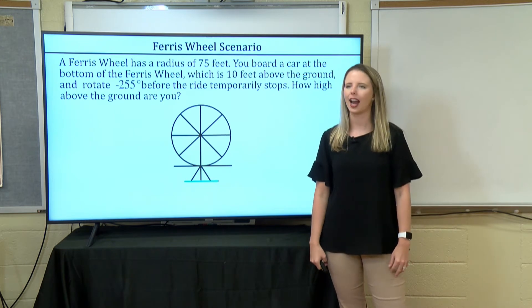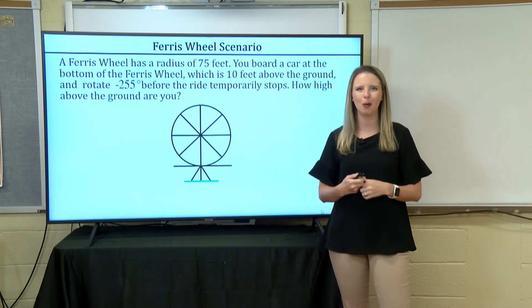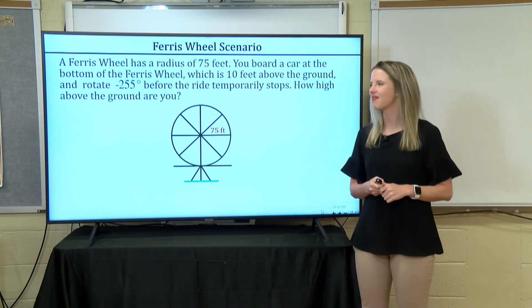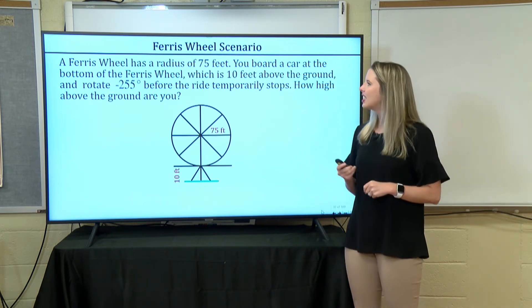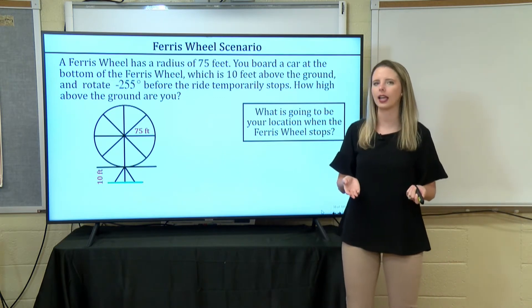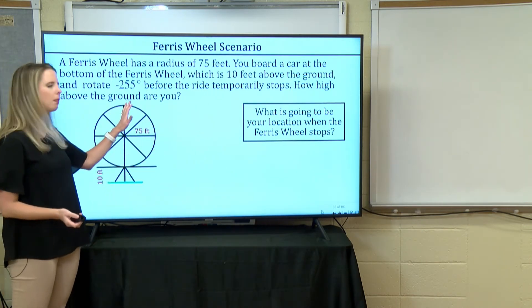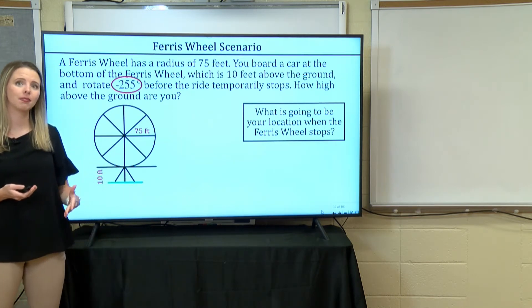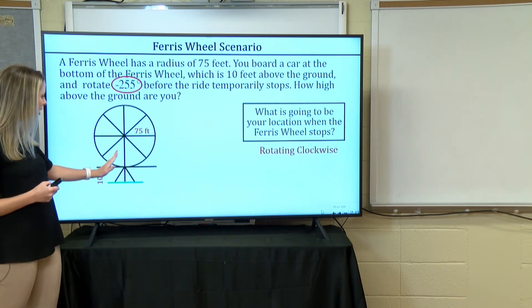Let's draw a picture. We have a ferris wheel with a radius of 75 feet, and it's 10 feet above the ground. We rotated negative 255 degrees, meaning we rotated clockwise. We started at the bottom — you don't get on a ride anywhere else. If we impose a coordinate plane, we started at the bottom, which is already negative 90 degrees from the x-axis. Now we've rotated an additional negative 255 degrees, giving a total of negative 345 degrees from the positive x-axis.